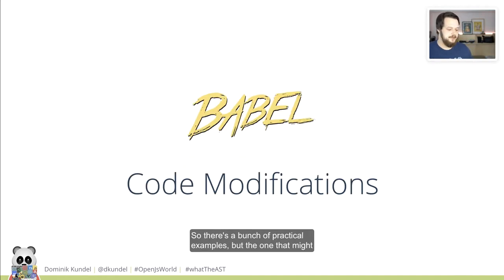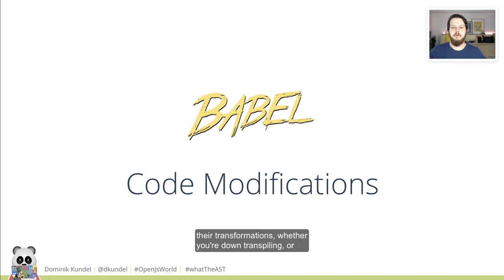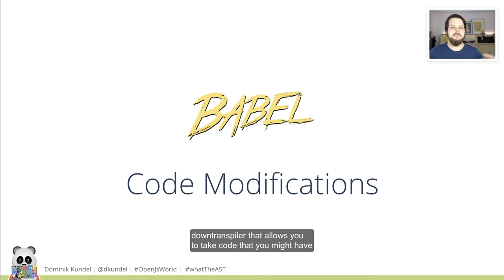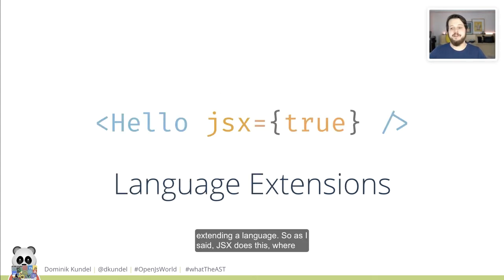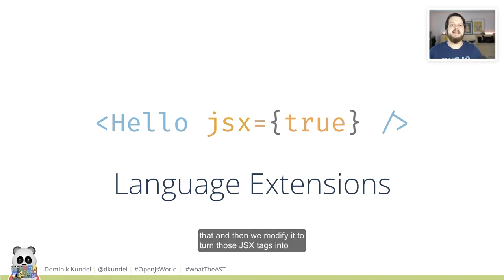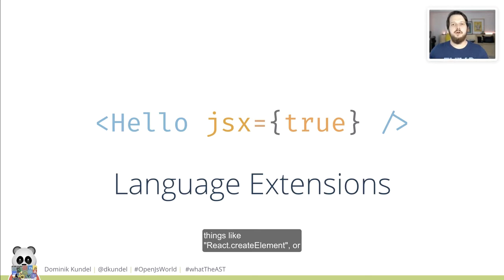The most familiar practical example if you're writing JavaScript today is Babel. Babel uses that concept in all of their transformations, whether you're downcompiling or using additional plugins people have built. If you're not familiar with Babel, it's a downcompiler that allows you to take code written in more modern JavaScript and transpile it to ES5 or ES3 compatible JavaScript, or compatible to exactly the browsers you're targeting. You can also extend the language — JSX does this, where we have an AST with JSX tags that we modify, turning those tags into function calls like React.createElement or Preact's h function.